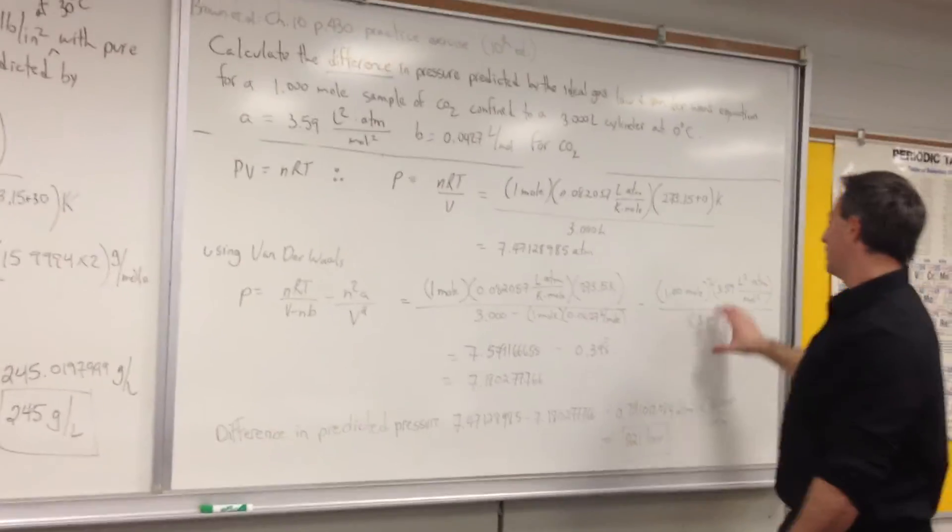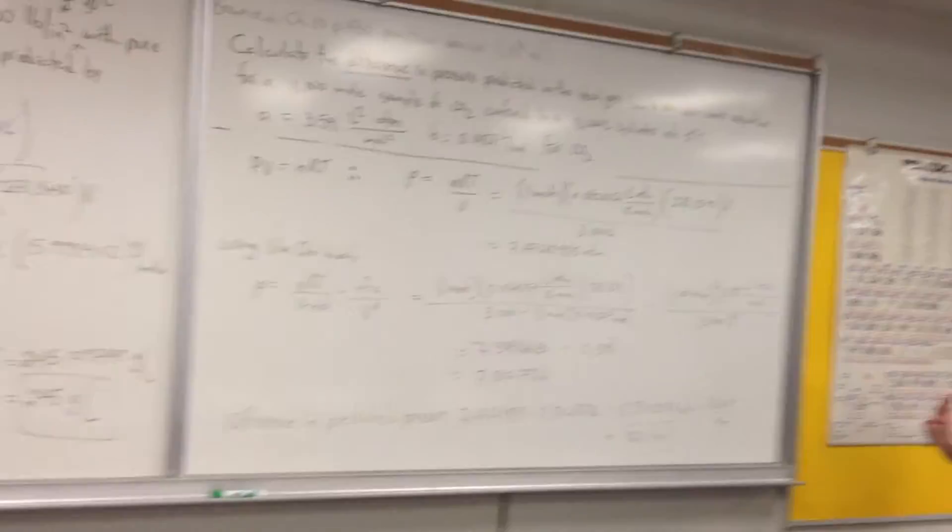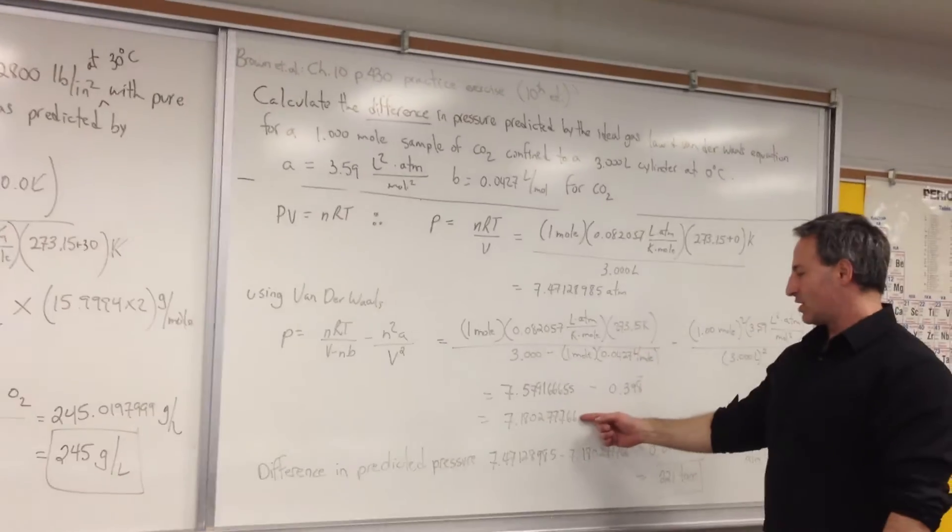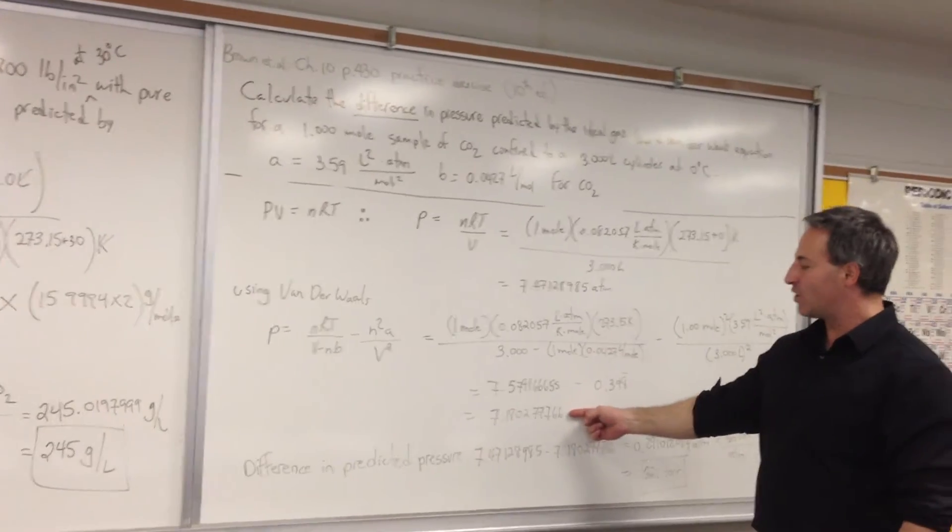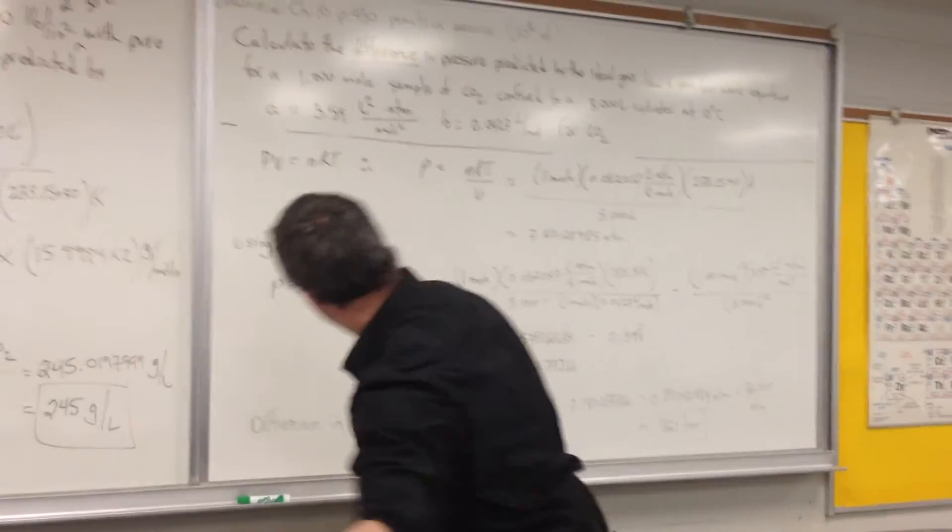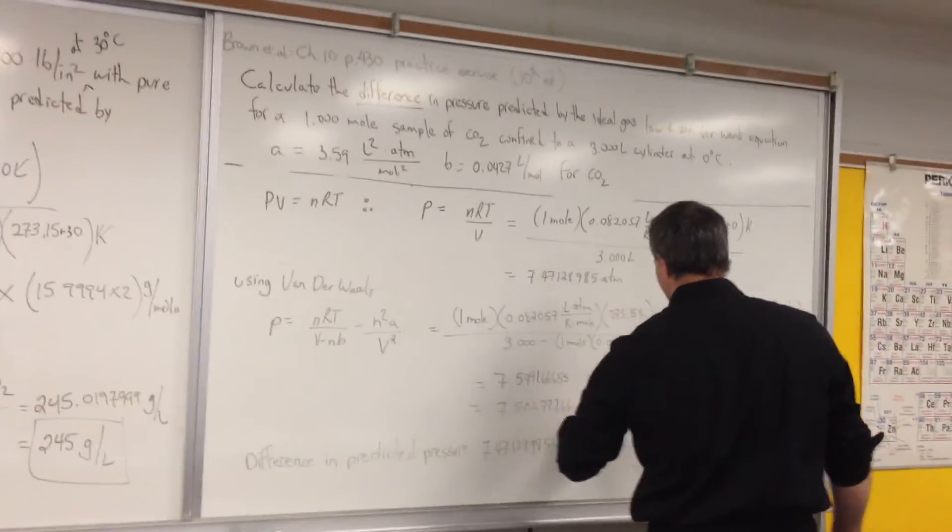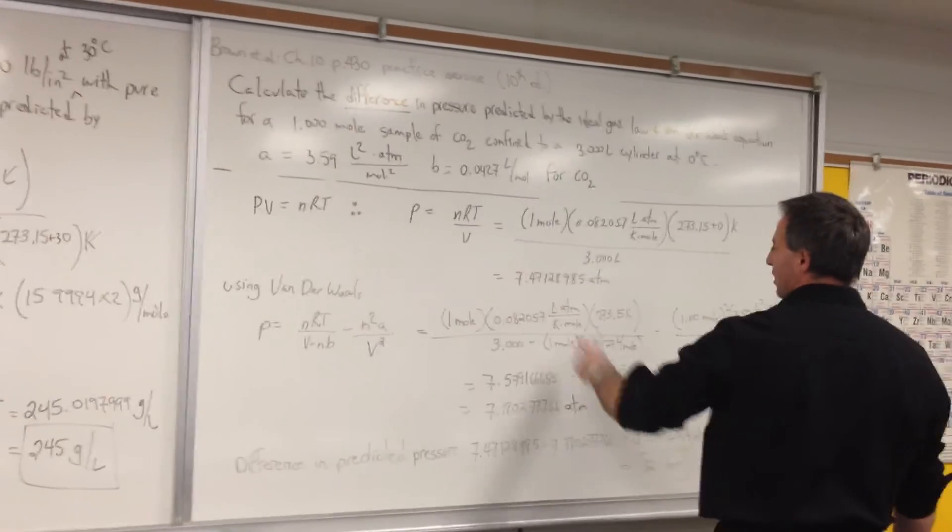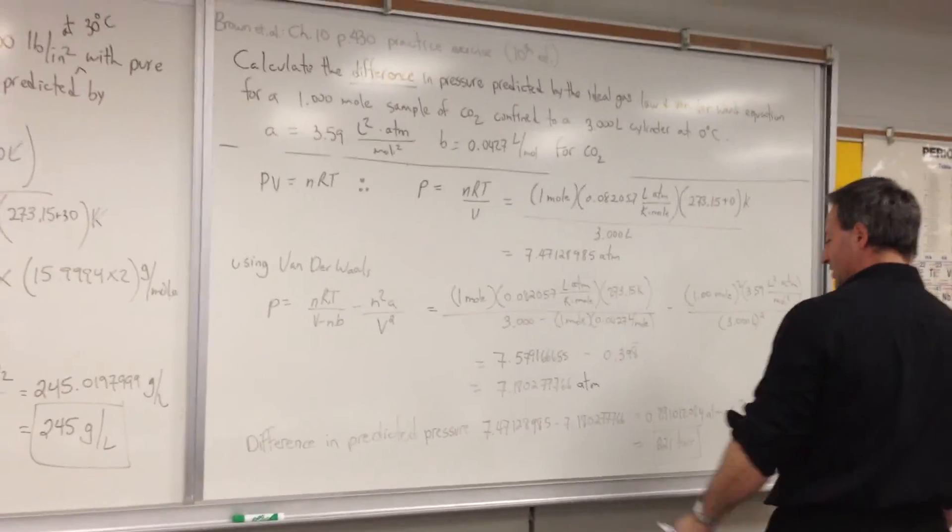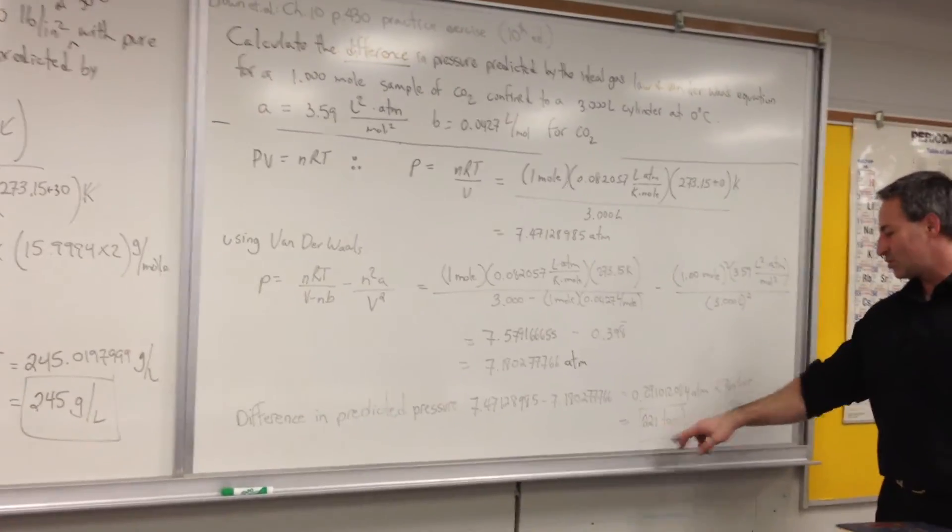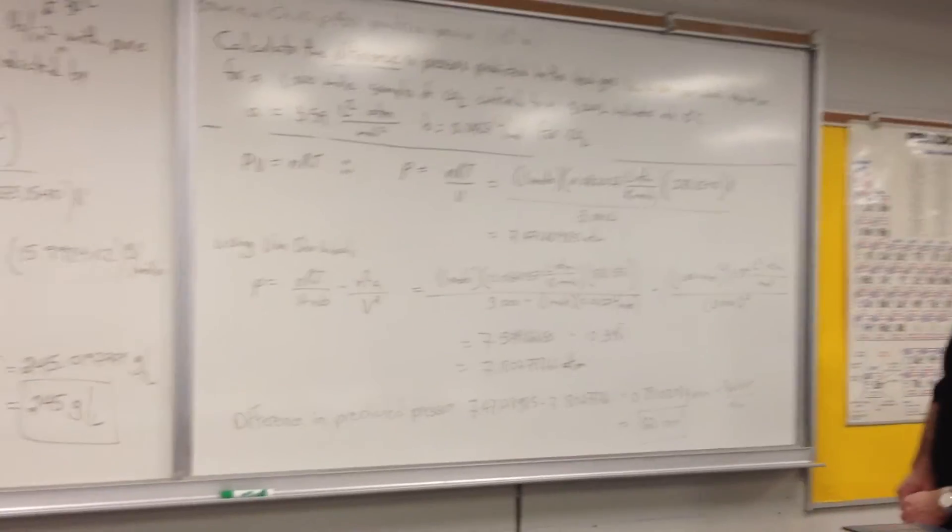This term accounts for the decrease in pressure as a result of the fact that gas molecules actually have a certain stickiness with each other. That reduces the pressure somewhat. So the pressure that we get, as predicted by the Van der Waals equation, is 7.18 atmospheres. And I subtracted the lower number from the higher number predicted by the ideal gas equation, obtaining 0.291. And I took the liberty of converting it to torr. So the final line should be 221 torr. We use three significant figures.